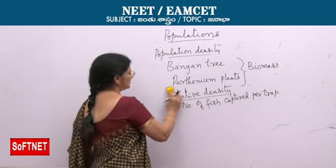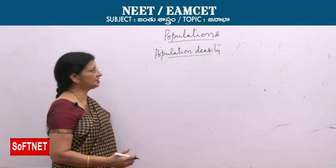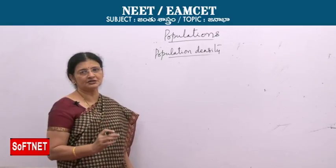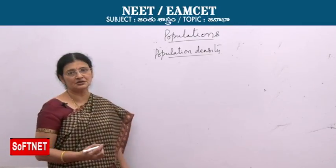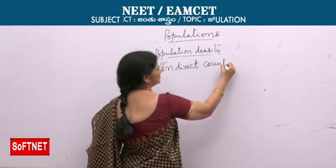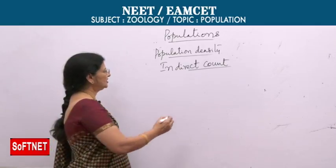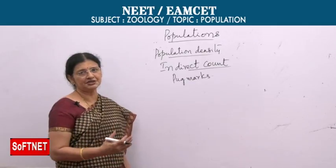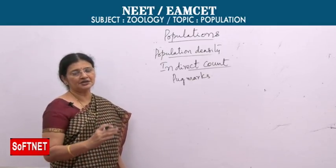For microorganisms like Chlamydomonas or some bacteria, we take volume — for example, how many Chlamydomonas organisms are there in a petri dish. Some thousands of Chlamydomonas in a specific volume are mentioned. Sometimes indirect count is used, generally to find the density of wild animals like elephants and tigers. They observe pug marks, that is footprints, near water sources. Depending on the pug marks, they can estimate the density of the individuals.